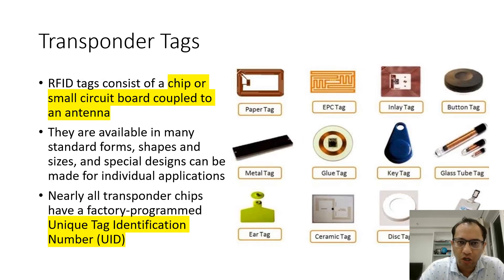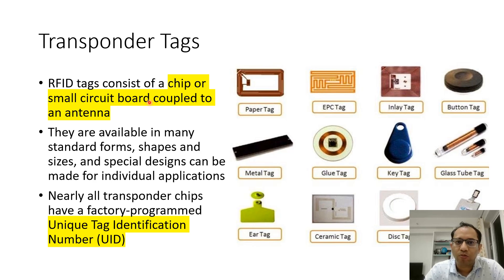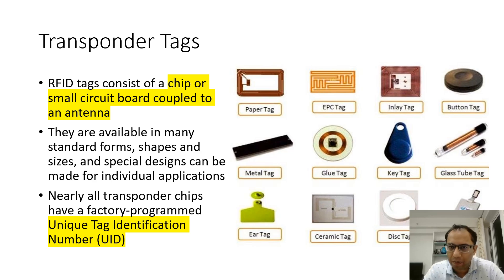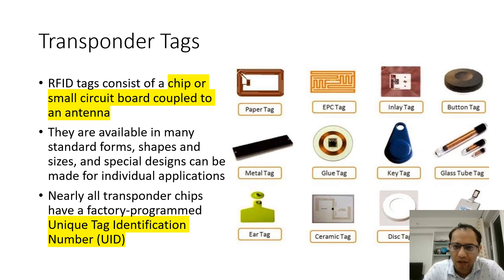So what are these transponder tags? These tags consist of a chip or a small circuit board coupled to an antenna. They all have a unique tag identification number or UID, and these come in various types — paper tag, EPC tag, glue tag, metal tag, etc.